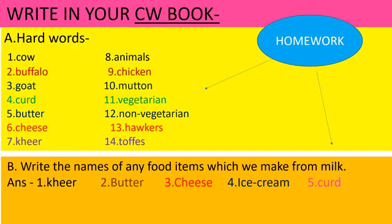Your favorite. Write the names of any five food items which we make from milk. Answer: 1. Kheer, 2. Butter, 3. Cheese, 4. Ice cream, and 5. Curd. Write down this question and answer in your CW book.